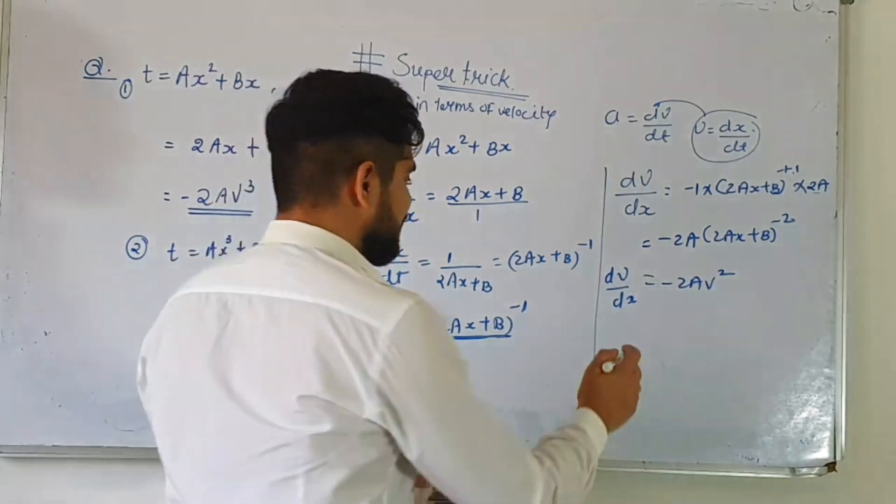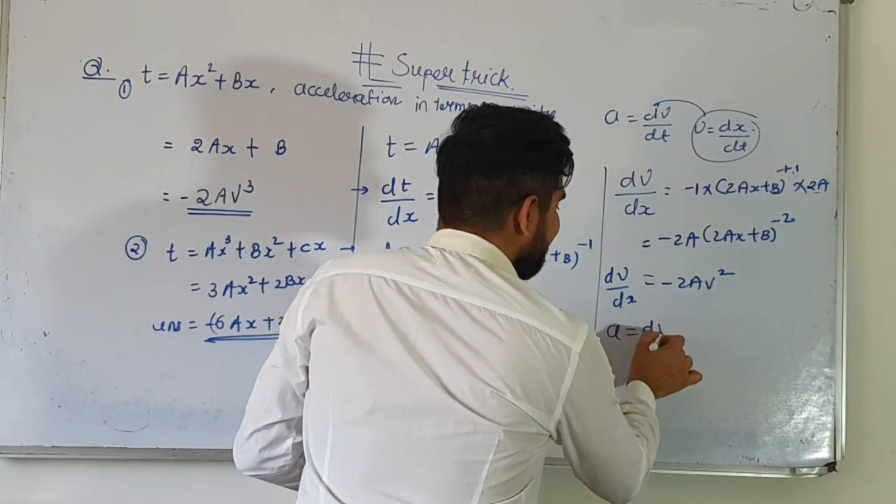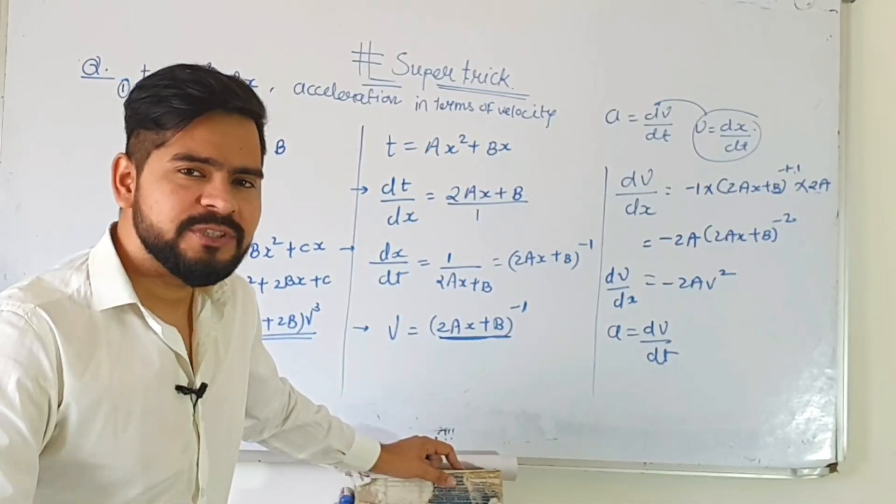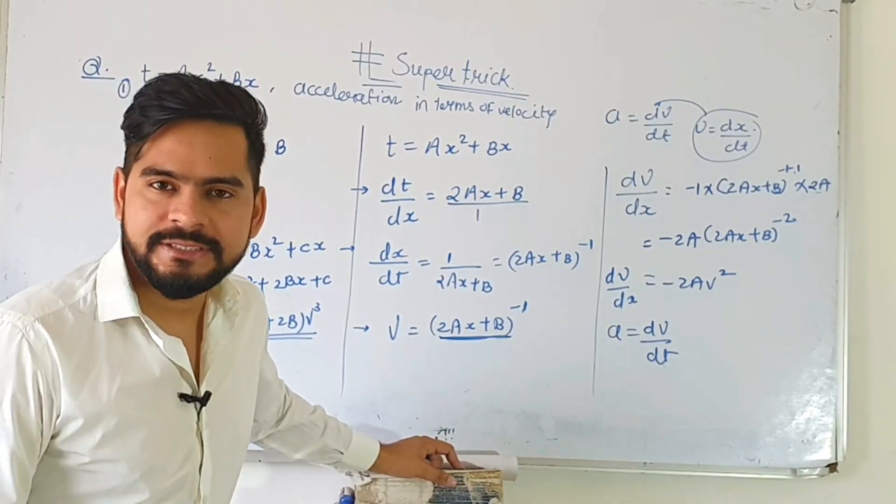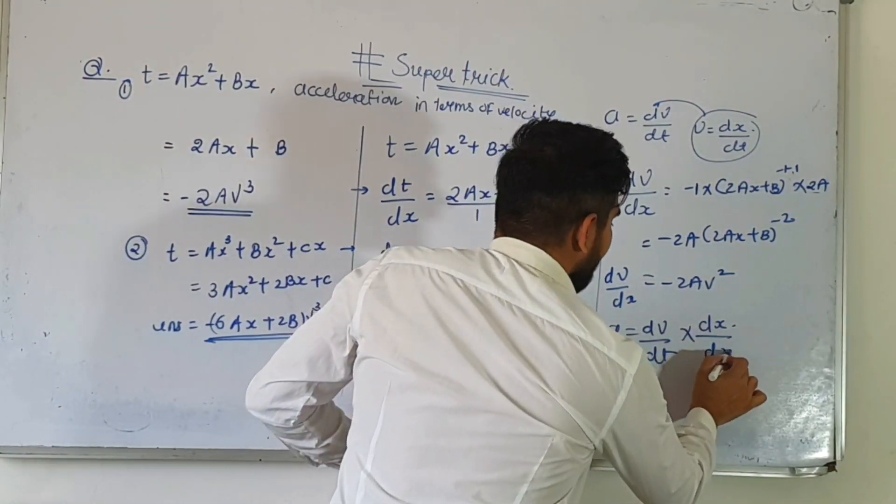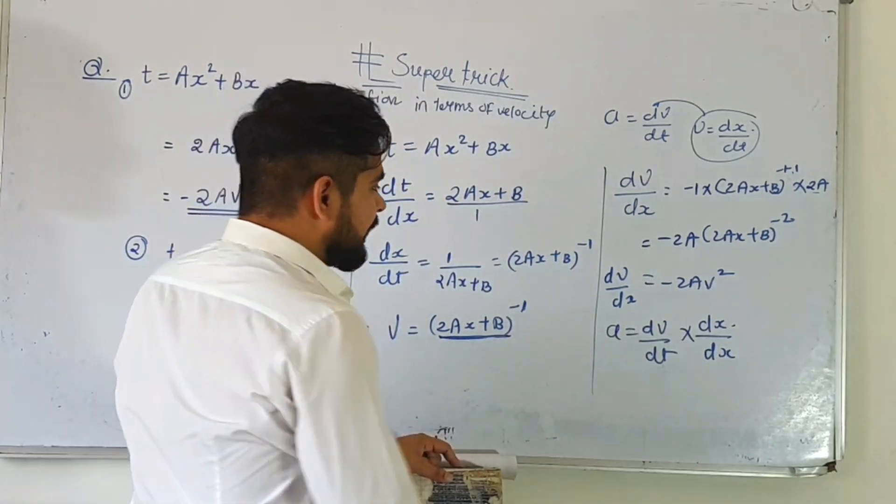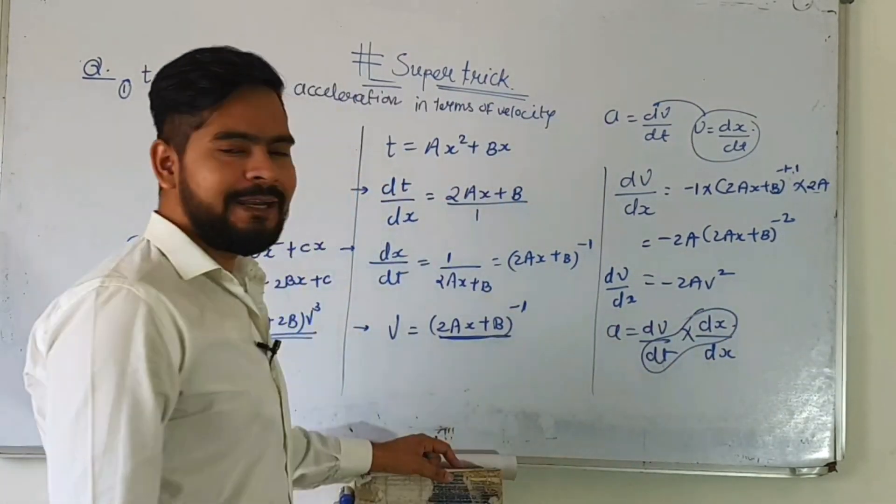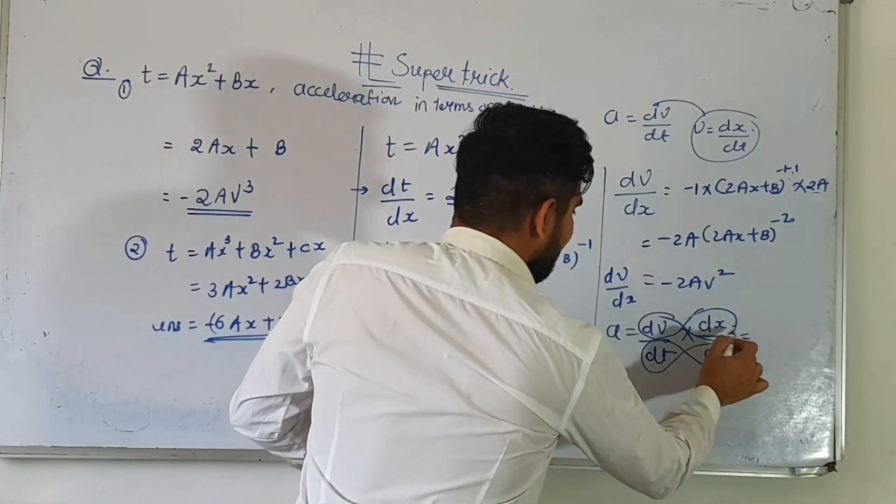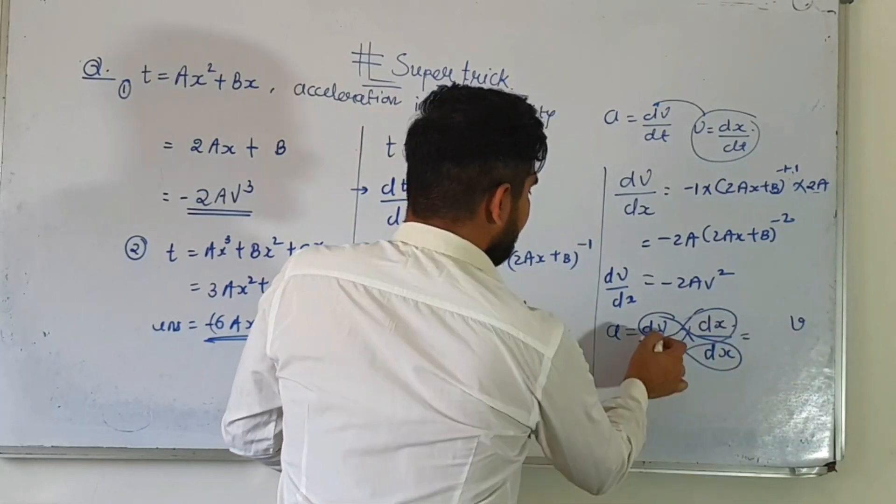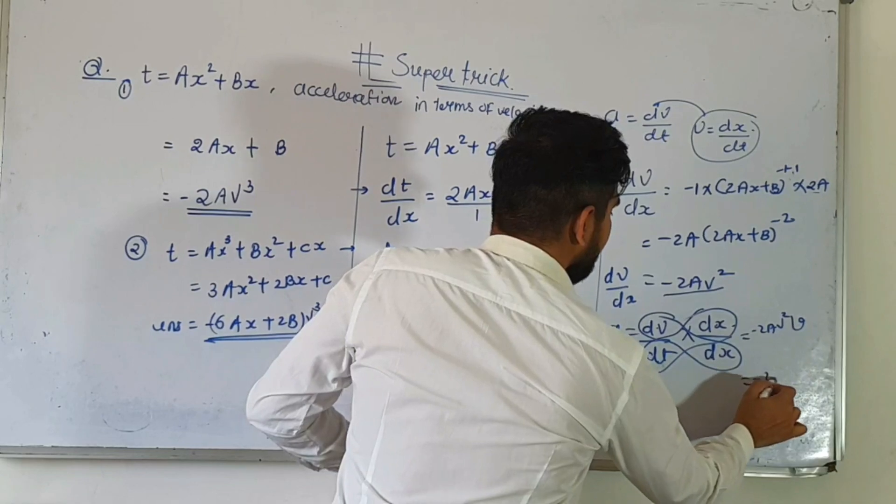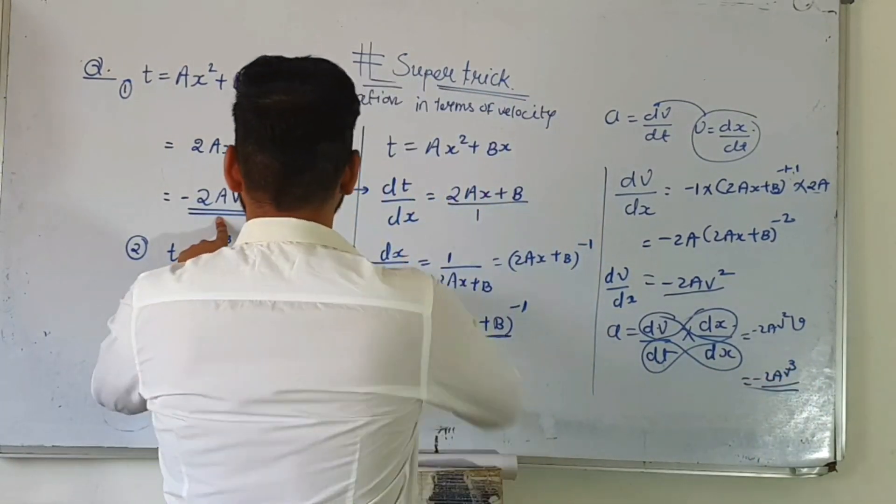So dv by dx is minus 2a times 2ax plus b to the power minus 2. And 2ax plus b to the power minus 2, since 2ax plus b to the power minus 1 is v, we'll write minus 2a v square. Amazing! So dv by dx is obtained. But still my answer is not complete because my final answer is a equals dv by dt. But here it's dv by dx. So we'll apply the chappal method. Chappal method means multiply like this: dx by dt and dv by dx. See, dx by dt is your velocity, and dv by dx we already have, that is minus 2a v square. Multiply to get minus 2a v cube. This is the final answer.